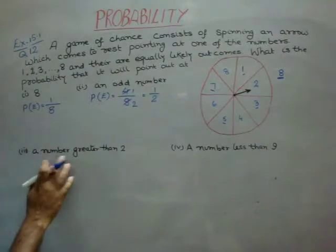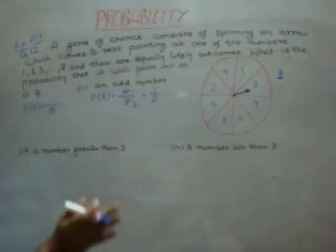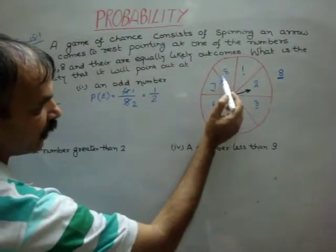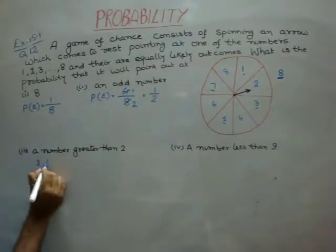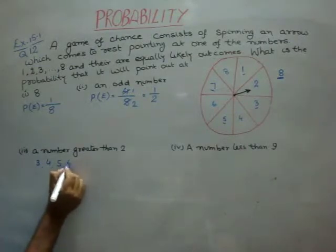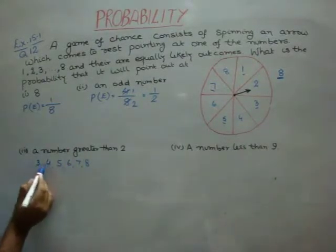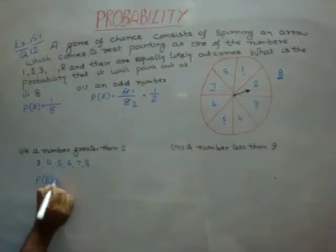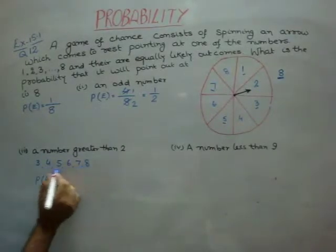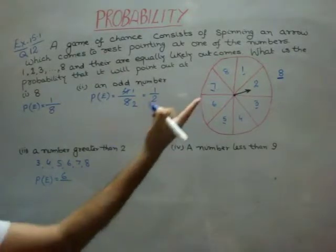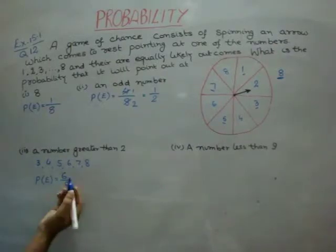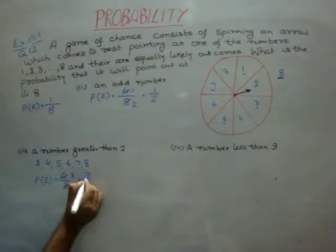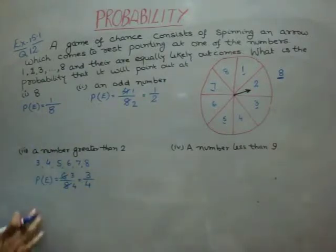Next, a number greater than 2. Now number greater than 2, which ones we have, 3, 4, 5, 6, 7 and 8. We write here, 3, 4, 5, 6, 7 and 8. So how many are there? 1, 2, 3, 4, 5, 6. So probability, our probability of event is equal to how many, 6, 6 by total numbers which is 8. Cut by 2, then you will get 3 and in 8 what will come, 4. So we got 3 by 4.